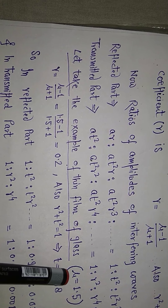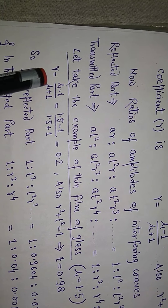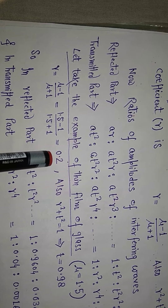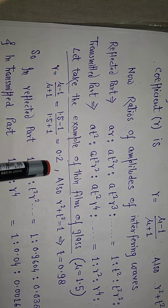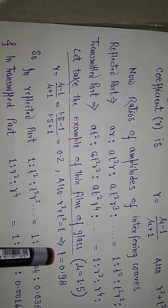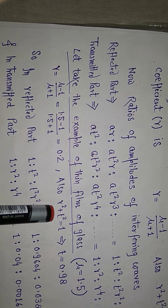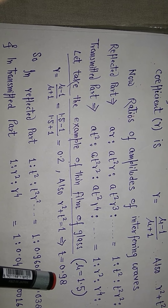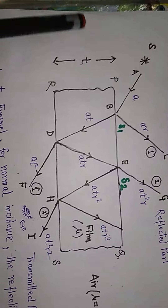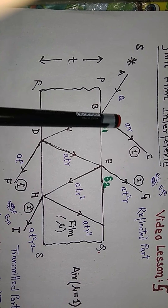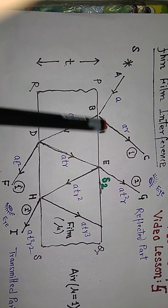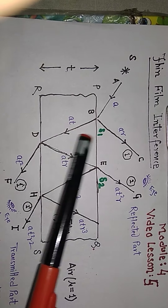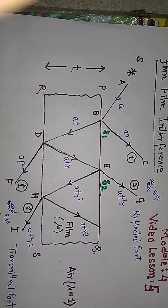Let's take the example of a thin glass film with refractive index n = 1.5. For glass, the reflection coefficient comes out to be 0.2, meaning 20%, and the transmission coefficient is 98%. So if it is a glass film, 20% of light will be reflected and 98% will be transmitted. The AR part reflects and the AT part transmits. At this point, the energy conservation principle is applied.